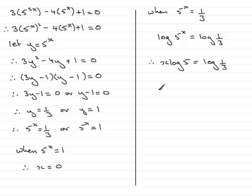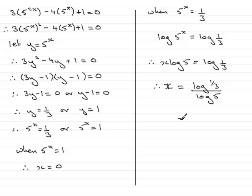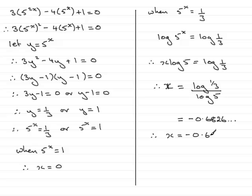If we now divide both sides by the log of 5, we get x equals the log of 1 third all divided by the log of 5. You need to use your calculator to work this out, and you'll find that you get minus 0.6826 and so on — so x is equal to minus 0.68 to two decimal places.